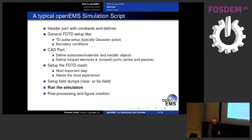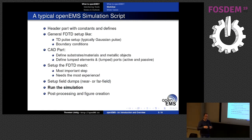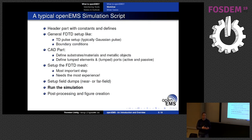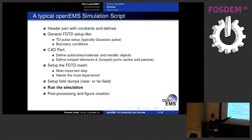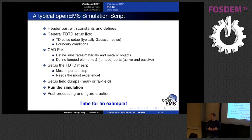A typical OpenEMS script starts with constants and a header, then the FDTD setup — choosing your excitation pulse and boundary conditions. Next you define or import your CST model structure, then set up the FDTD mesh. The mesh step is the most important and requires the most experience: getting the meshing right is critical. You can also set up field dumps to record what you want, then run the simulation and do post-processing.